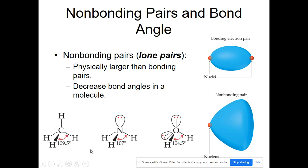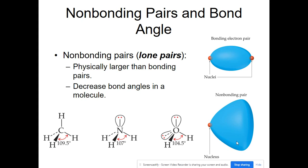Bonding electrons are attracted to two different nuclei, so the electron cloud is restricted in how it can move between those two atoms. Non-bonding pairs are only attracted to one nucleus, so their movement is much less restricted — they can spread out quite a bit. As a result, non-bonding pairs take up much more space than bonding pairs.